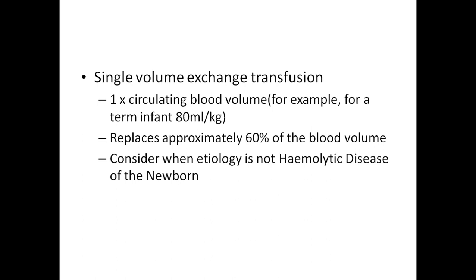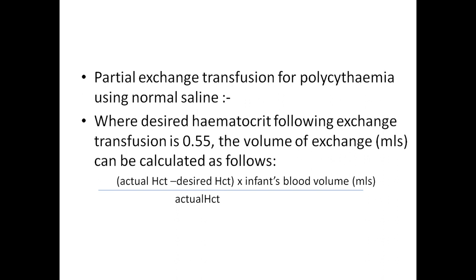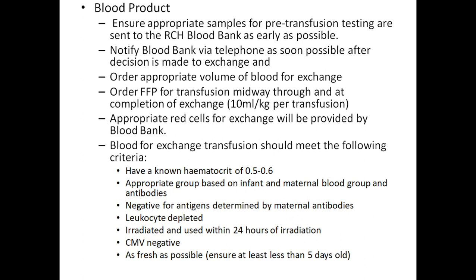Single volume exchange transfusion (1 x circulating blood volume), for example 80 ml per kg for a term infant, replaces approximately 60% of the blood volume. It is considered when the etiology is not hemolytic disease of the newborn. Partial exchange transfusion for polycythemia uses normal saline when the desired hematocrit following exchange transfusion is 0.55. The volume of exchange in ml is calculated as: (actual hematocrit minus desired hematocrit) x infant's blood volume in ml, divided by actual hematocrit.